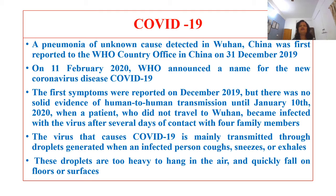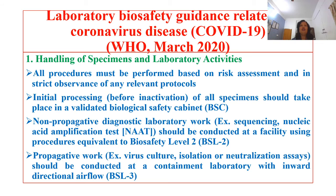Now coming to what we are observing during these days — COVID-19, a pneumonia disease. Initially it was detected in Wuhan, China during December 2019. In February 2020, WHO announced its name as COVID-19. The first symptoms were reported in December 2019, but there was no solid evidence of human-to-human transmission initially. The virus that causes COVID-19 is mainly transmitted through droplets generated when an infected person coughs, sneezes, or exhales. The droplets are too heavy to hang in the air and quickly fall on floors and surfaces.